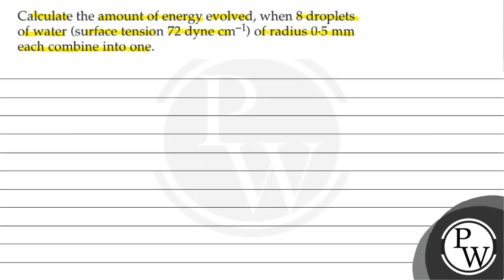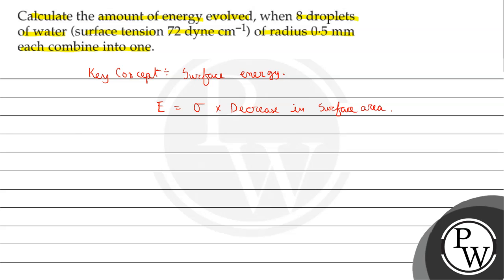Let's see which key concept is used. Here we are using surface energy, and the formula for surface energy is given by E equals sigma multiplied by the change in surface area. Here sigma is the surface tension and E is the energy evolved. Let's take this as equation number 1.